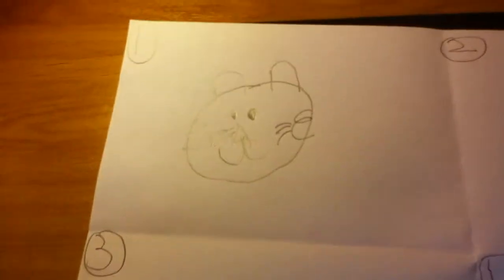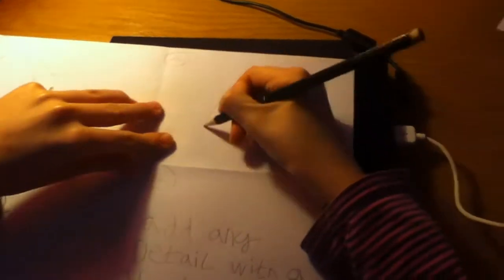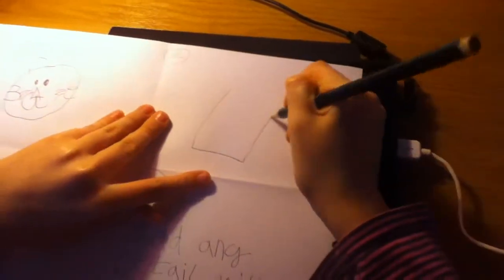So step two. Okay, so step two we're going to draw the body. It's basically like drawing a dress on the tiger like that.